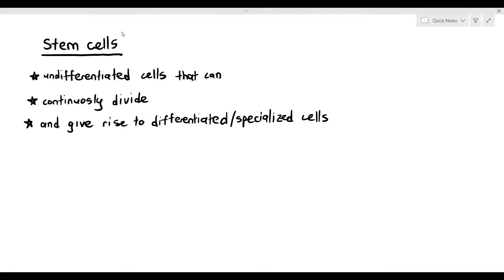So there are a few concepts that we have to talk about. I've highlighted it for you. We highlight the word undifferentiated cells, continuously divide, and give rise to differentiated or specialized cells. Let's look at each of these concepts one by one.